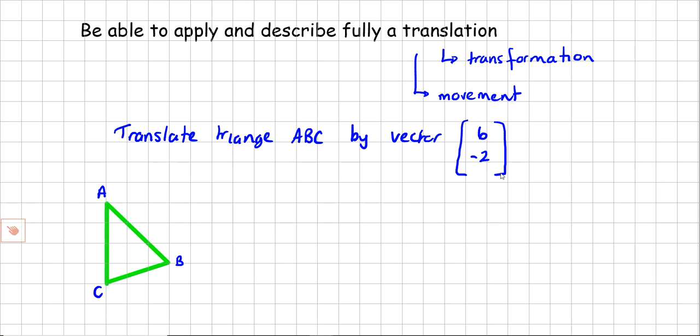So you now know, don't you? Straight away. That means that triangle is going to move six across in the x direction and two down in the y direction.